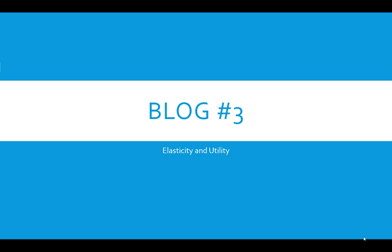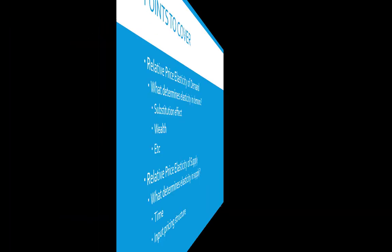If you had a couple of markets in blog post number two, you might narrow it down to just one market for blog number three. There are three points we're going to cover: number one is relative price elasticity of demand, number two is relative price elasticity of supply, and number three is personal utility optimization. Let's talk about the first one — relative price elasticity of demand.